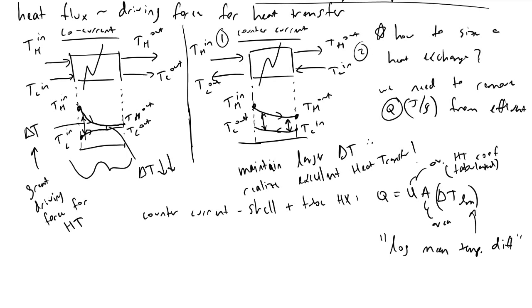I will let a variable called delta T one be equivalent to the temperature difference on side one of our counter current heat exchanger, which would be T h in minus T c out. And I will let delta T two be the temperature difference or the driving force on the opposite side of our counter current heat exchanger, which in this case would be T h out minus T c in.